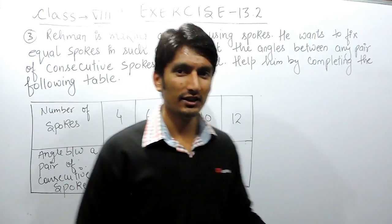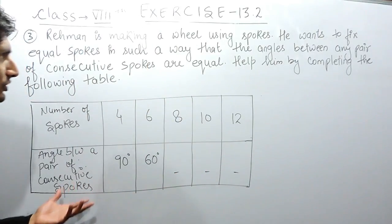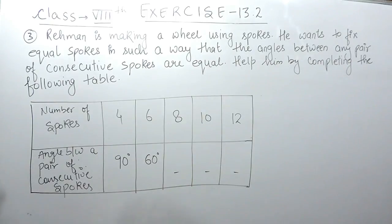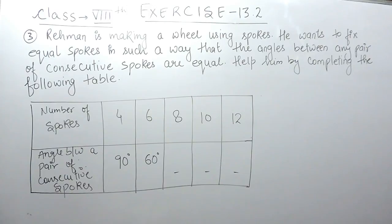Hello everyone. In this video we are going to solve question number three of exercise 13.2. This question says: Rahman is making a wheel using spokes. He wants to fix equal spokes in such a way that the angle between any pair of consecutive spokes is equal. You have to help him by completing the following table.